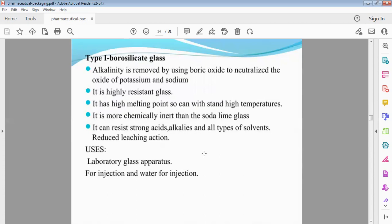Borosilicate glass - alkalinity is removed. Alkalinity is removed by using boric acid, neutralized by oxide of potassium. This is highly resistant glass with high melting point. High temperatures it can withstand. More chemical resistant. Soda lime glass is easier to work with than borosilicate glass. Resistant to strong acid, alkaline, strong acid, any type of solvents. Leaching resistant. Used in laboratories, laboratory glass apparatus, injections, water for injection.